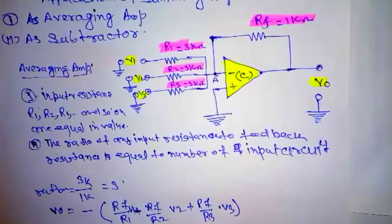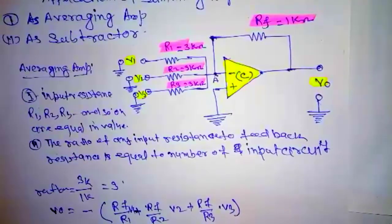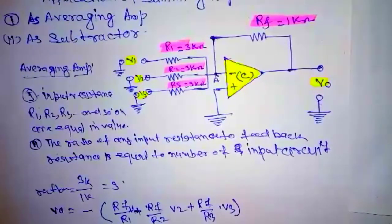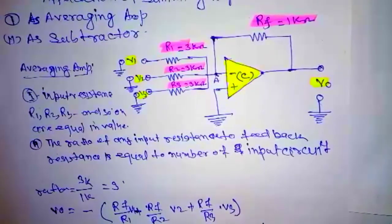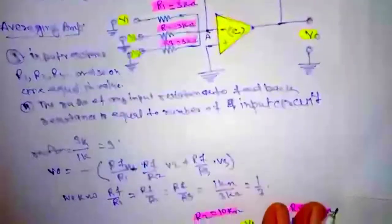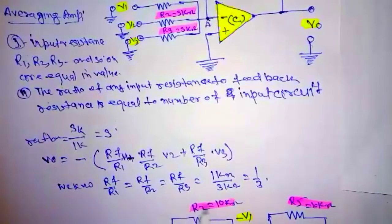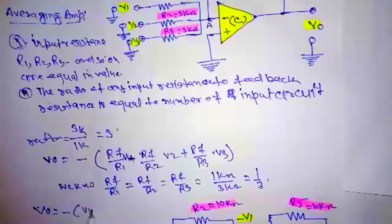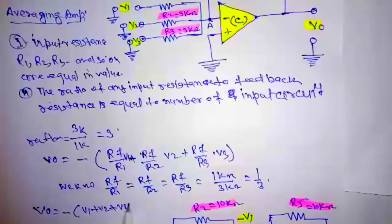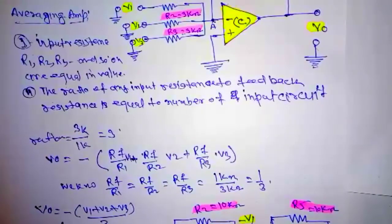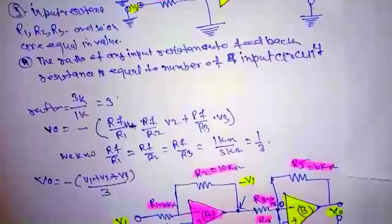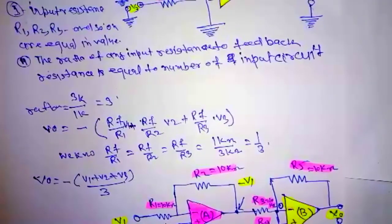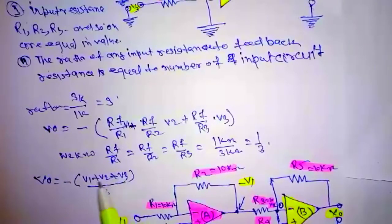Since Rf upon R1 equals Rf upon R2 equals Rf upon R3 equals one upon three, we can write Vo equals minus V1 plus V2 plus V3 divided by 3. This minus sign indicates phase reversal. The output is the average of the input voltages.